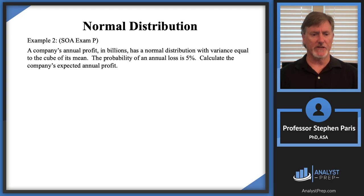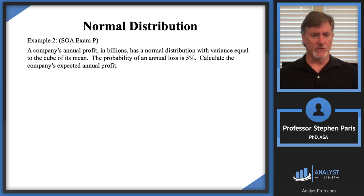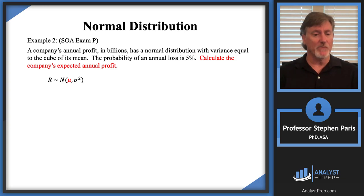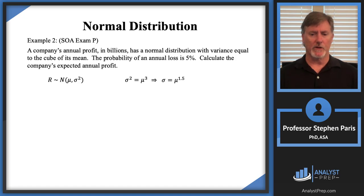Here's another example from the P exam sample questions. A company's annual profit in billions has a normal distribution with variance equal to the cube of its mean. The probability of an annual loss is 5%. We want the company's expected annual profit. Let R be the annual profit, following N(μ, σ²). I'm told σ² = μ³, which implies σ = μ^(3/2) = μ^1.5. The expected annual profit is μ, which I need to find.